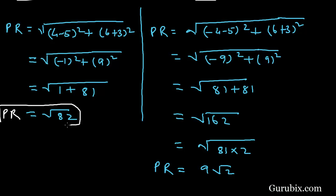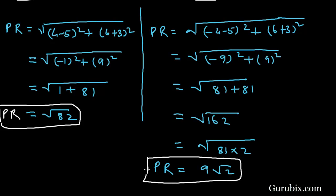So here are the two different values of PR when x is +4 and -4. This is the solution of the question. Thank you.